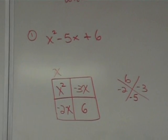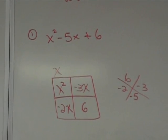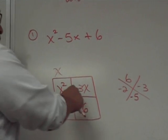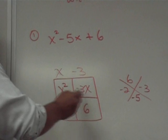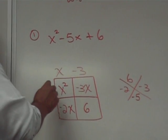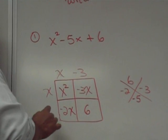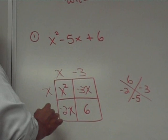What about negative 3X and positive 6? What's a common factor? We can pull out a negative 3 out of these two guys. So, negative 3, the common factor here. And the common factor here, negative 2.